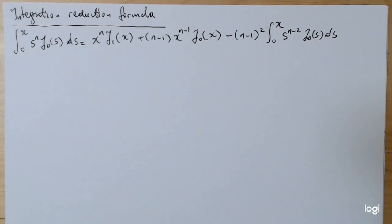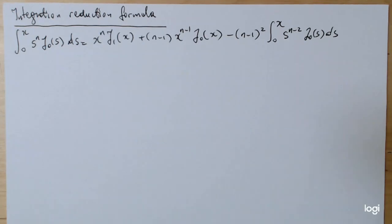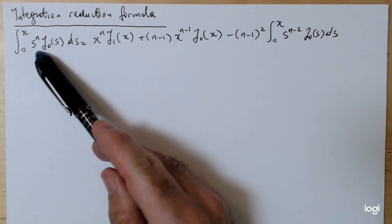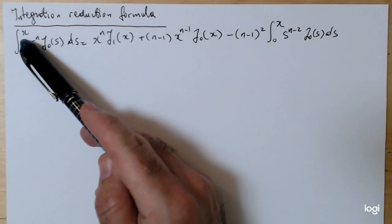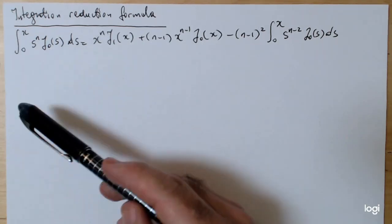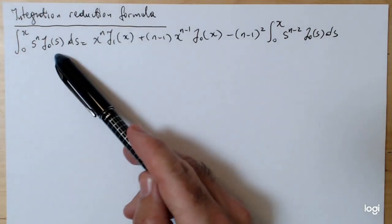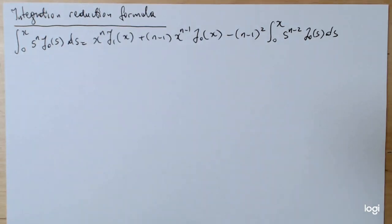A very useful formula, also given in the Bessel Functions handout, is the so-called integration reduction formula. It allows you to write down in a more compact form, or to solve for all practical purposes, the integral of s to the n of j naught — just a power of s — where one of the bounds is given in terms of x. You do integration by parts repeatedly, also using some of the formulas derived earlier.